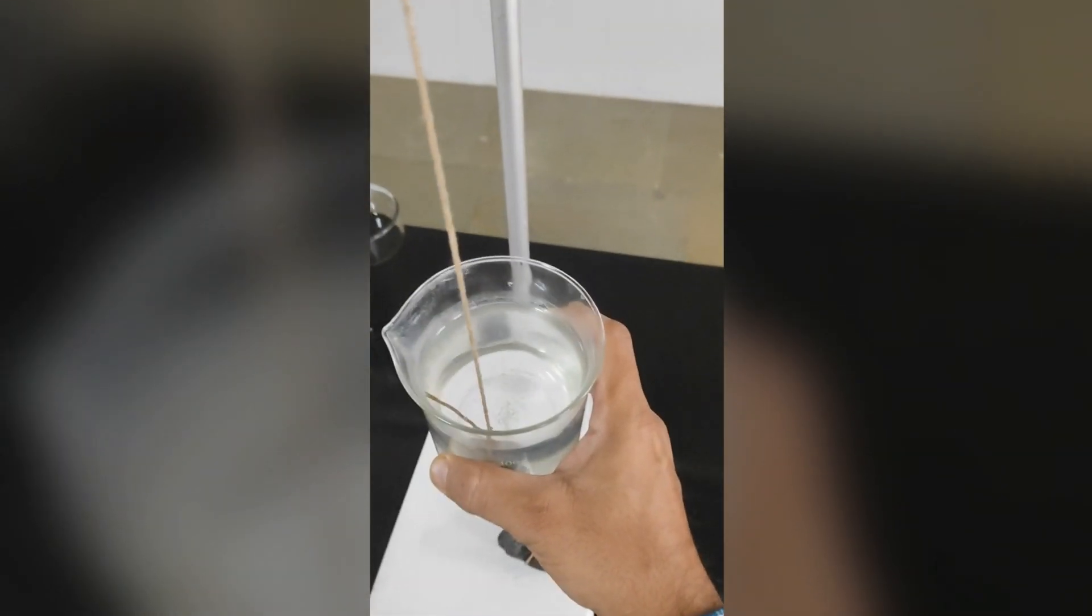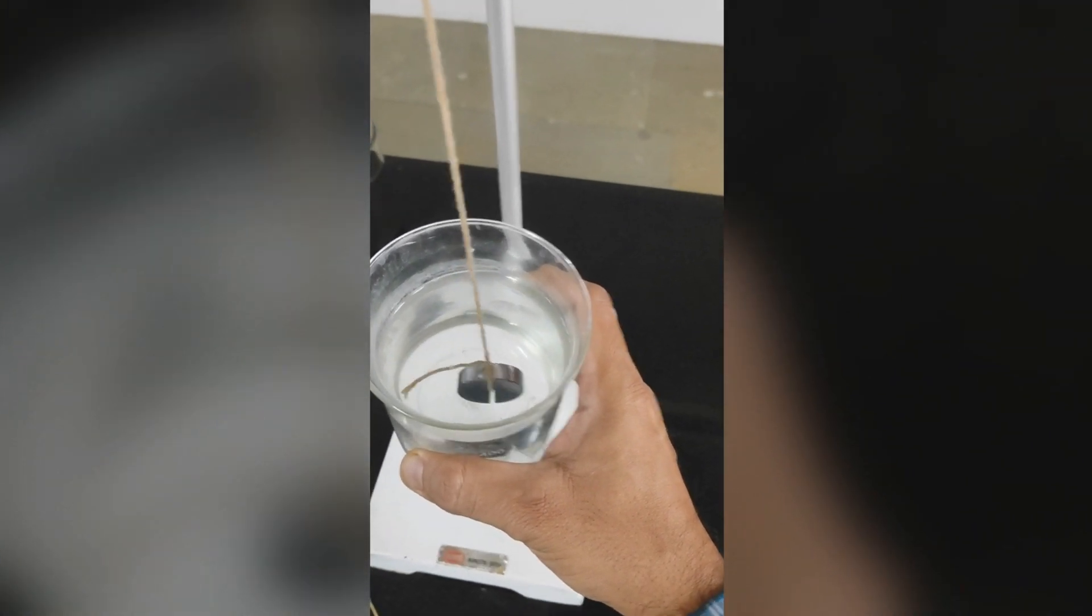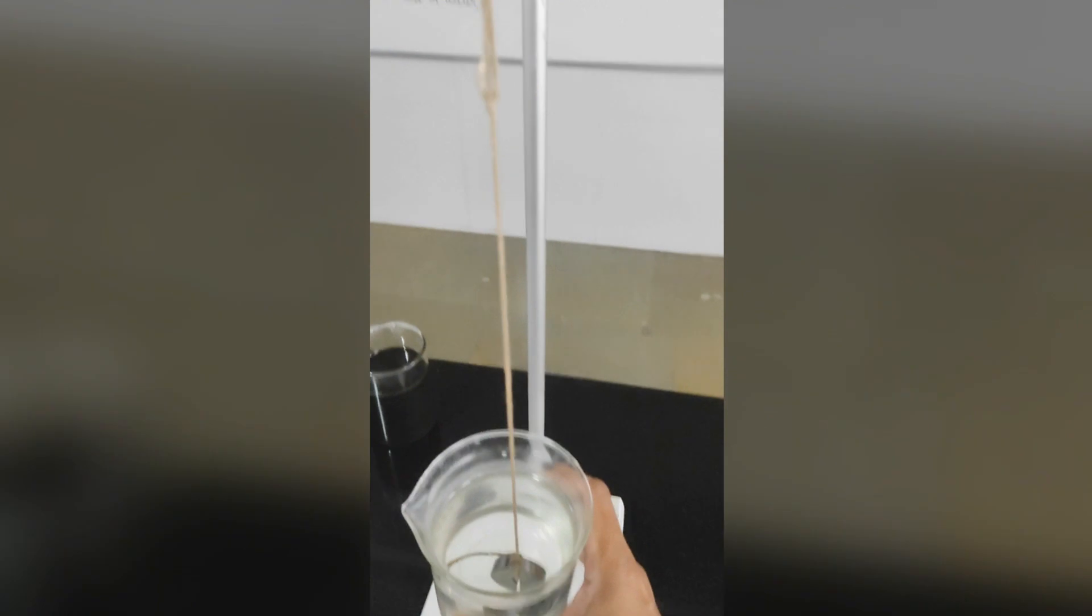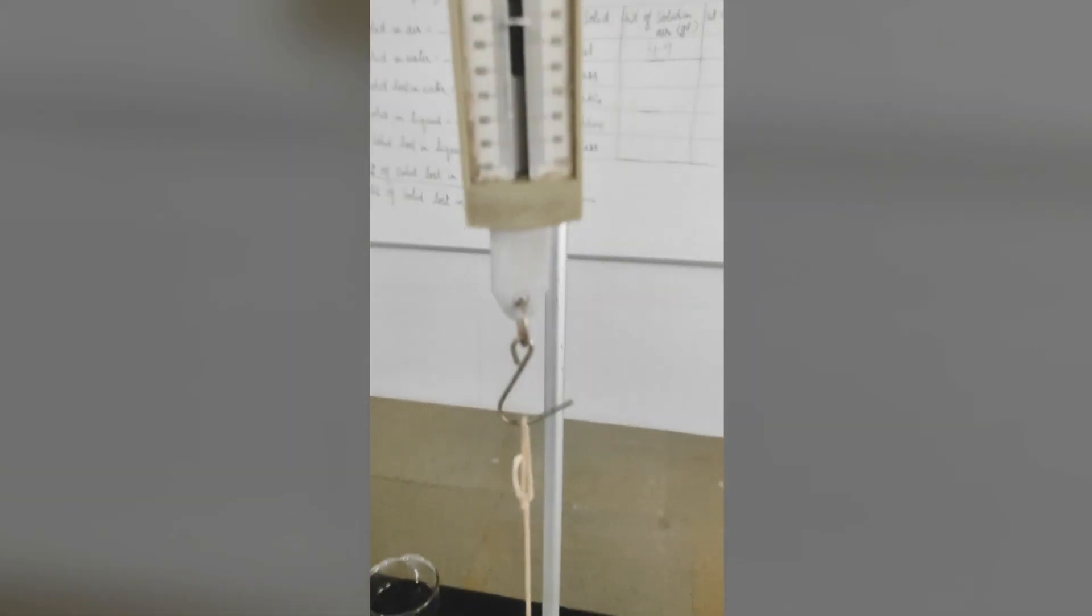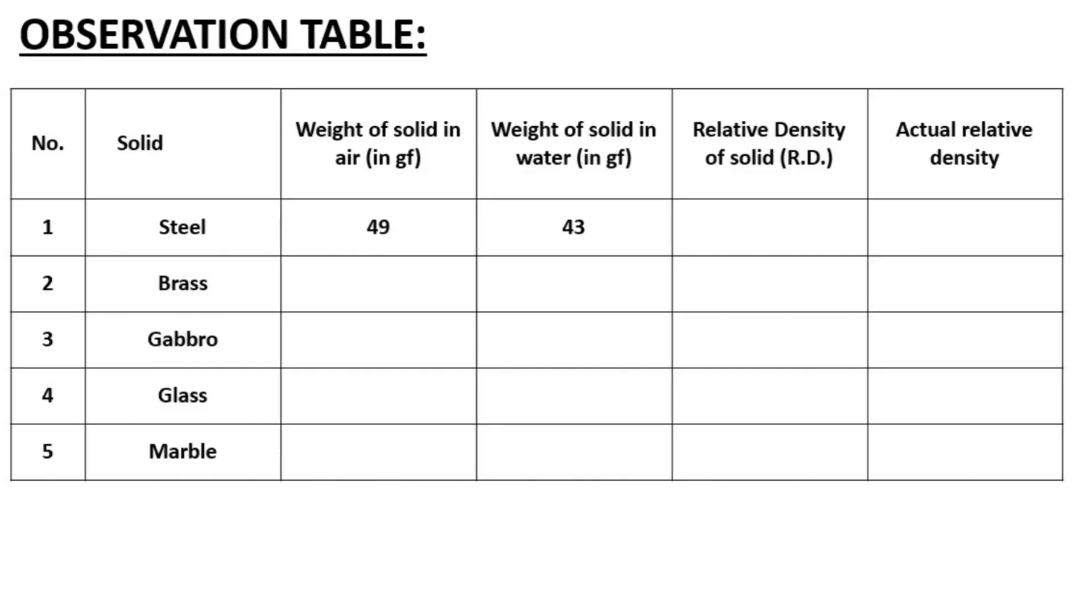Now let us immerse the steel in water. When you immerse the solid in water, make sure that it does not touch either bottom or walls of the container. The weight of steel in water is 43 gram force. Let us note down these readings in observation table.